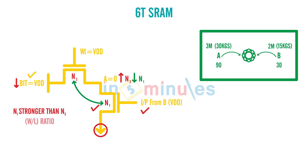When it comes to MOSFETs, the strength is given in terms of the W/L ratio. So this means the W/L of n1 should be greater than the W/L of n3 if we want to ensure that we don't lose a zero. Note that reading has still not happened — we have just ensured that node A will be stabilized to zero. This condition is called the read stability criteria.